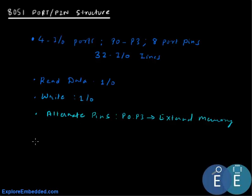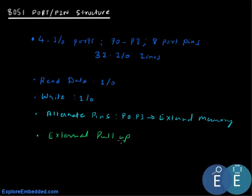To use an 8051 port as a digital input-output we need to remember a couple of things. The first is that port 0 does not have an internal pull-up. So if you plan to use port 0, an external pull-up needs to be connected. If we have a port 0 pin — say port 0.0 — by default this will float, so there is no fixed 0 or 1. To use this pin as output or input we need to connect it to a pull-up resistor to VCC.